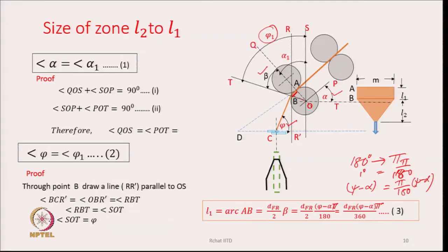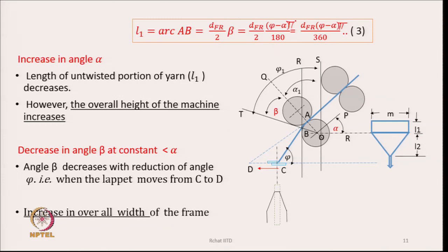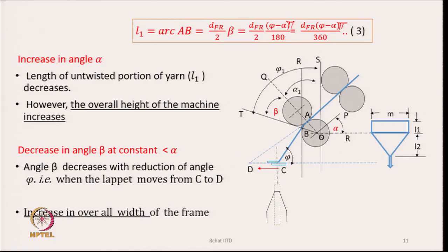L1 therefore depends upon the diameter of the bottom roller, the inclination angle of the drafting system, and the location of the lappet guide. Now, if we change angle alpha — making the drafting system more and more vertical — angle alpha increases. As alpha increases, psi minus alpha decreases, the numerator decreases, and therefore L1 decreases. That means the L1 portion will be shorter and shorter as the drafting system is made more and more vertical.